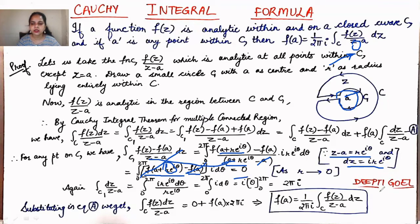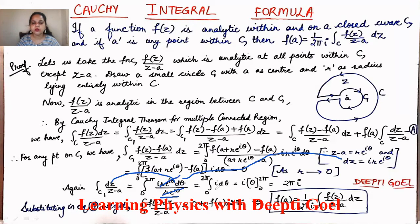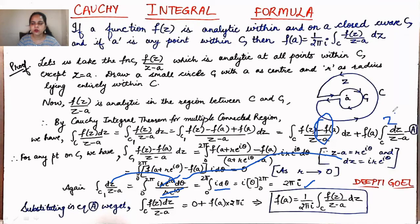For the second integral ∮_C1 dz/(z − a), we substitute dz = i·r·e^(iθ) dθ and z − a = r·e^(iθ) in the denominator. These cancel, leaving ∫₀²π i dθ = 2πi. So the first integral was 0 and the second gives 2πi. Substituting back: ∮_C f(z)/(z − a) dz = 0 + f(a)·2πi. Therefore f(a) = (1/2πi) ∮_C f(z)/(z − a) dz.